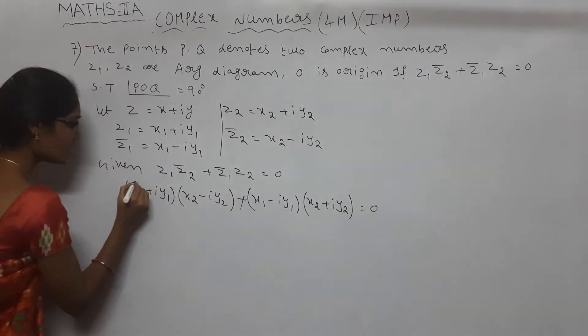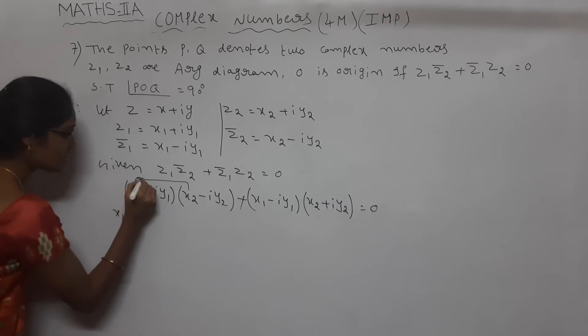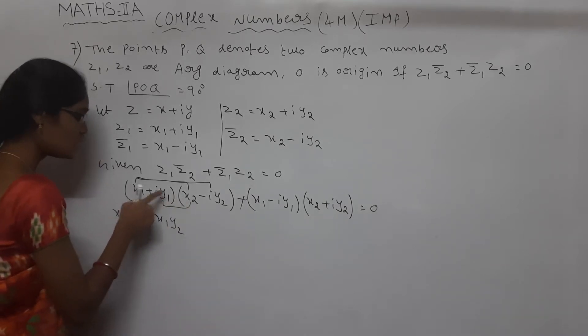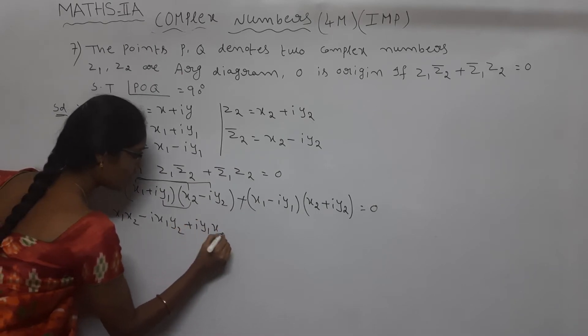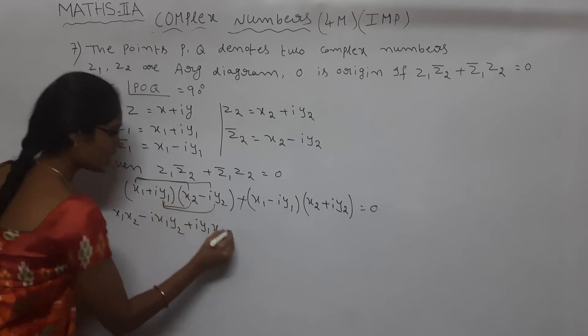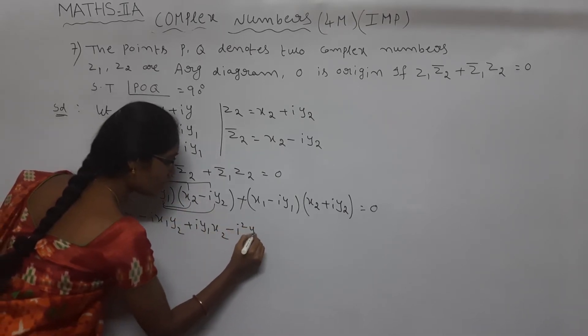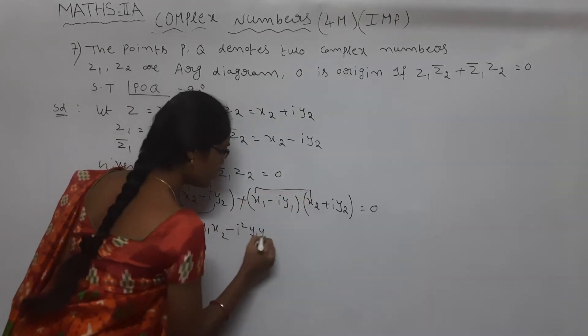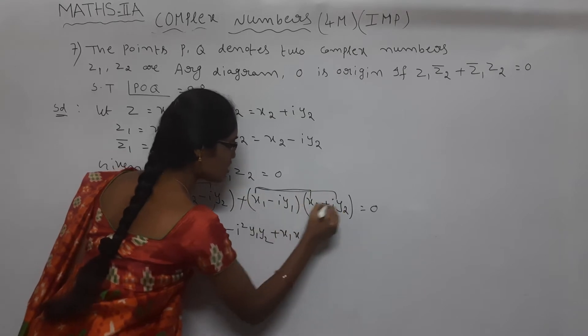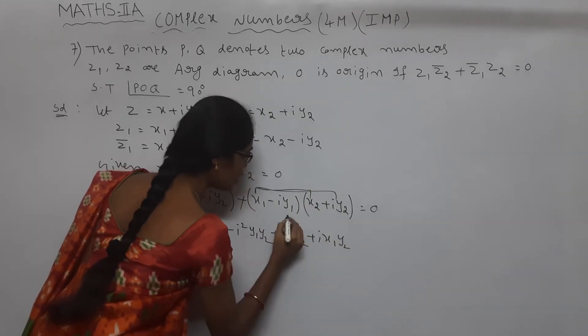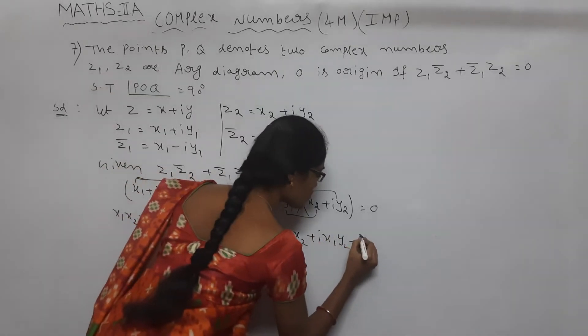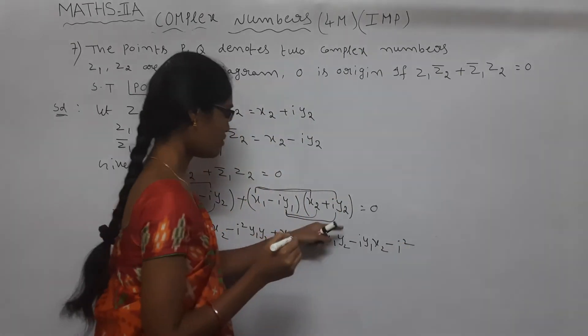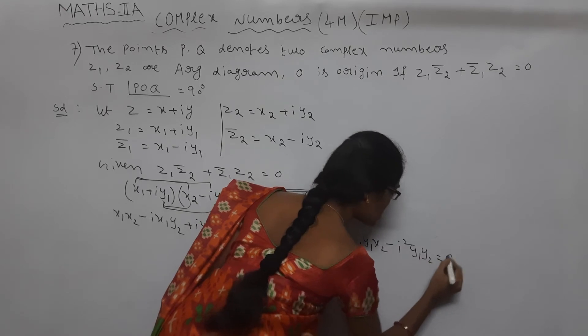Now, multiplication. See here: X1 into X2, X1 X2. Next, X1 into minus iY2, minus iX1Y2. Next, plus iY1 into X2, plus iY1X2. Next, plus iY1 into minus iY2, minus i squared Y1Y2. Complete this two brackets multiplication. X1 into X2, X1 X2. Next, plus iX1Y2. Next, minus iY1X2. Next, i into i, minus i squared Y1Y2 is equal to zero.